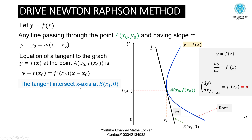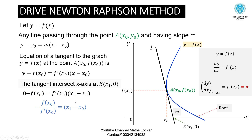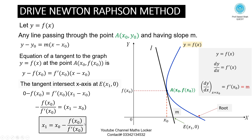That tangent intersects the x-axis at point E with coordinates (x₁, 0). Since this point lies on the tangent, it must satisfy the tangent equation. Substituting y = 0 and x = x₁: 0 - f(x₀) = f'(x₀)(x₁ - x₀). Simplifying and shifting x₀ to the left-hand side, we get: x₁ = x₀ - f(x₀) / f'(x₀).